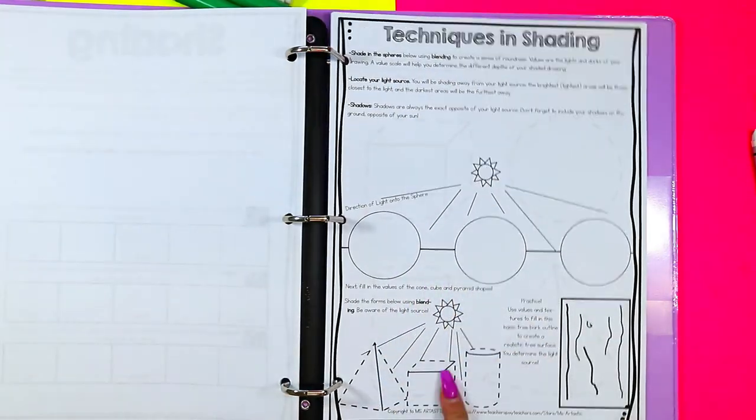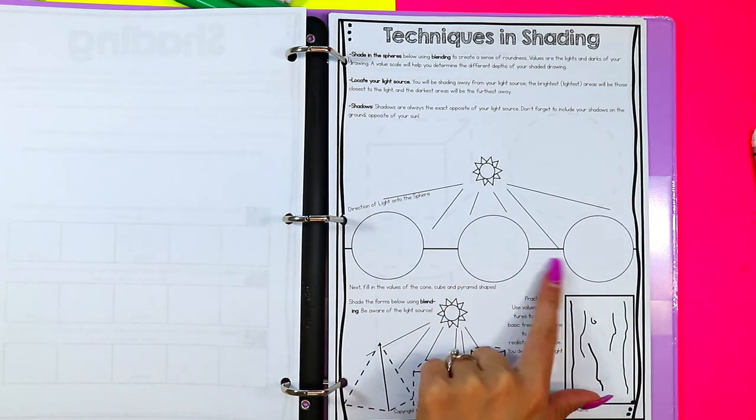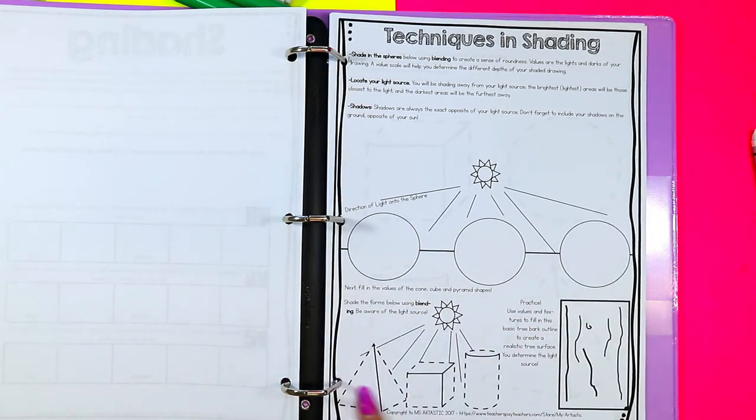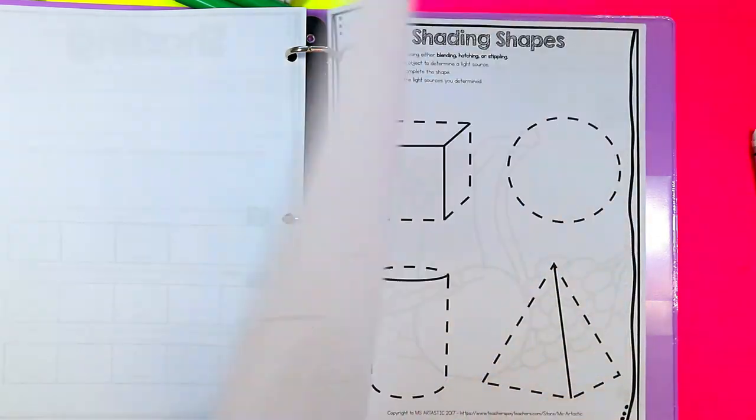This is like the one that you saw on that very first page. This is their actual worksheet where they're going to be creating light source, light on spheres, shapes and shading, and just using value and shading to create texture on bark.